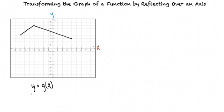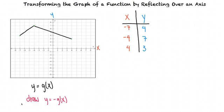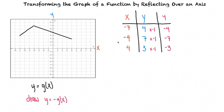Say we're given the function y equals g of x. Once again, we can make a table of x and y coordinates of some of the main points. Now we're asked to draw the graph y equals negative g of x. This time, the negative sign is not next to the x, but in front of the entire function. This means that we have to multiply every y coordinate in every point of the original function by negative 1. Our x coordinates will remain the same, so we can draw our new graph from the new points.